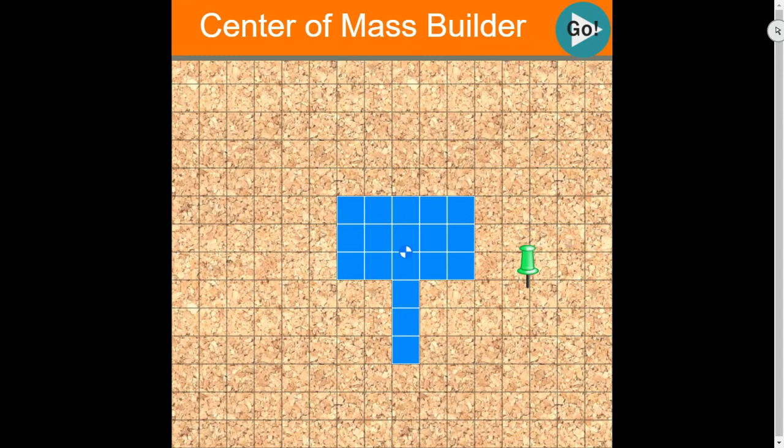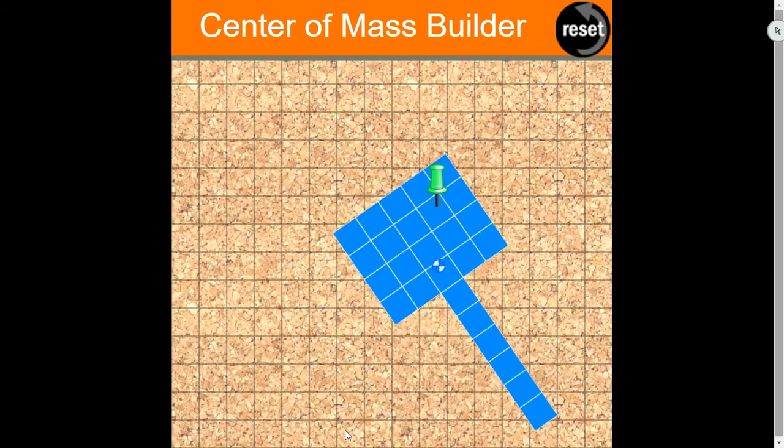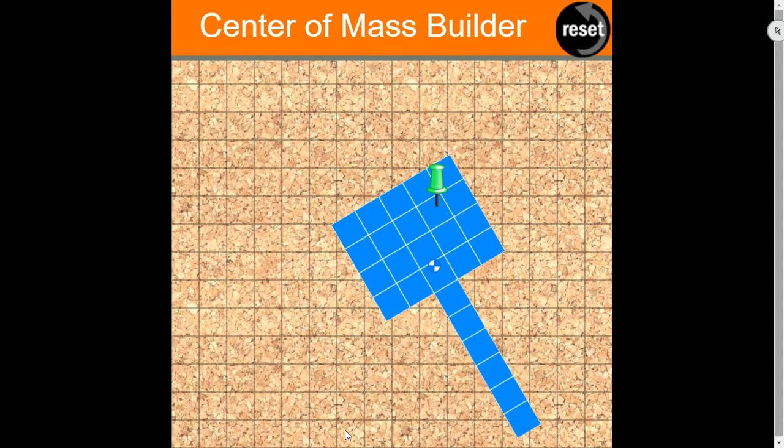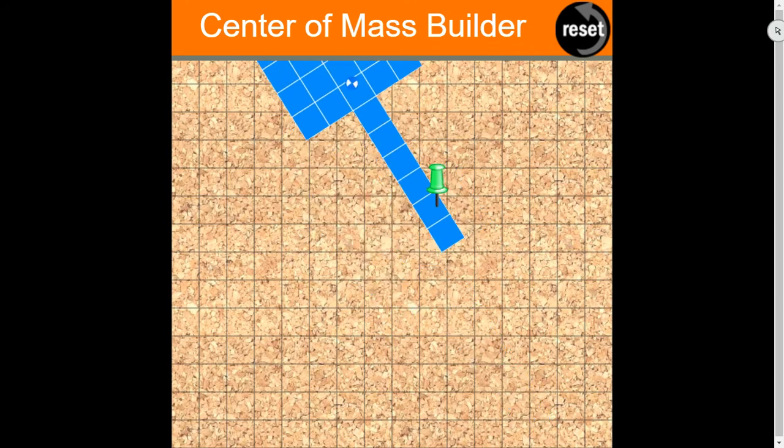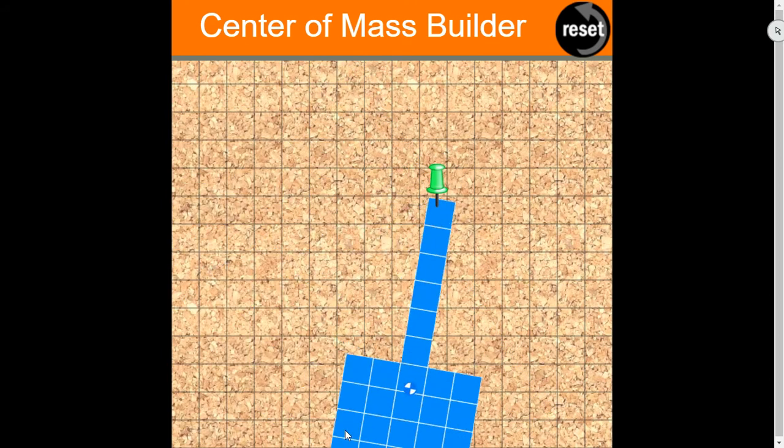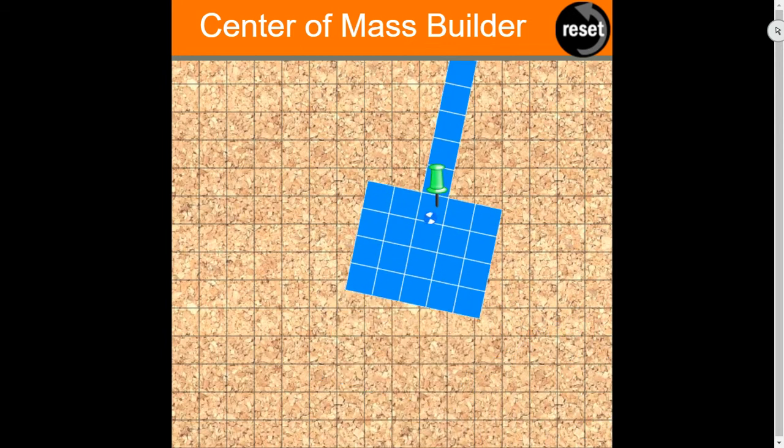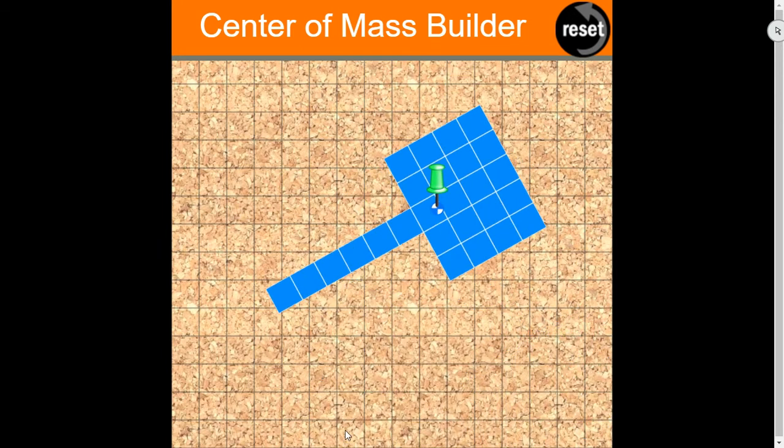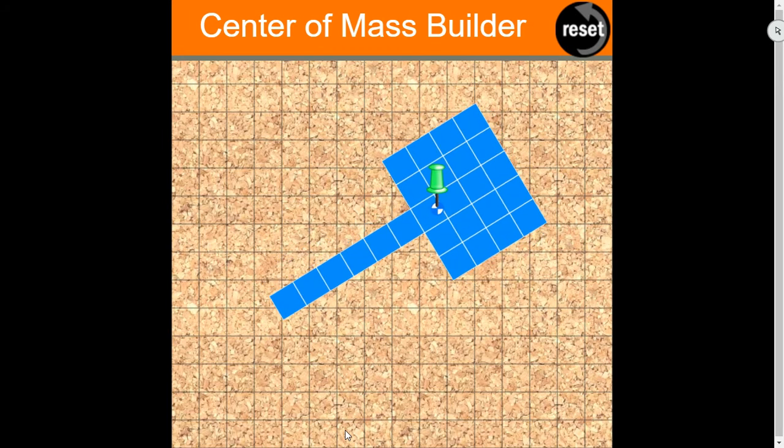Now we can do that same thing, but instead of having a uniform object, I can have something that is not uniform. So our center of mass is not in the center of our object. If I move it, it swings around that pivot point.